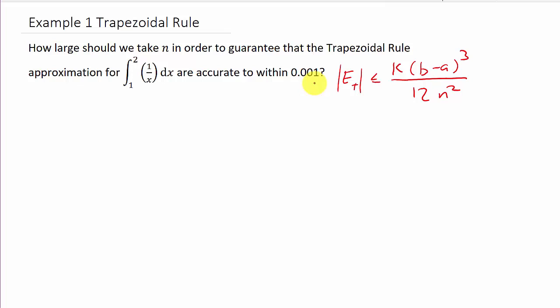All right, now, first thing I need is I need the second derivative. So let's get the second derivative because we know the second, the absolute value of the second derivative is less than or equal to k.